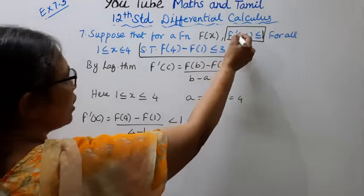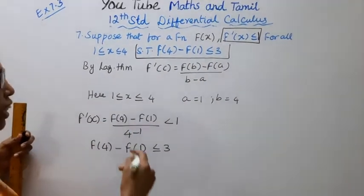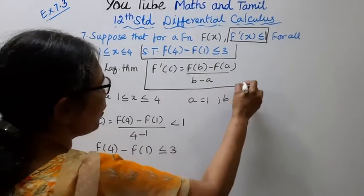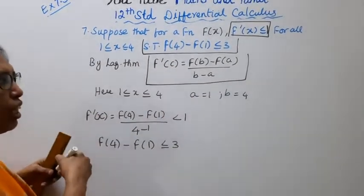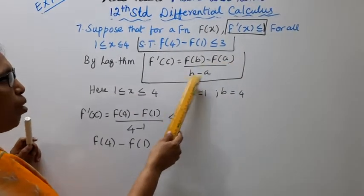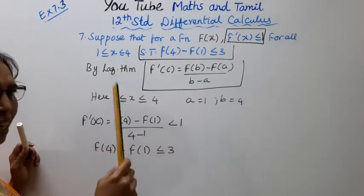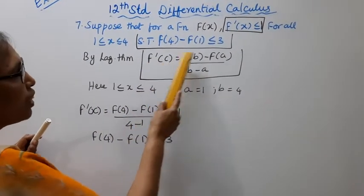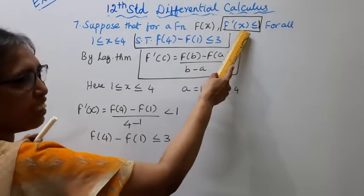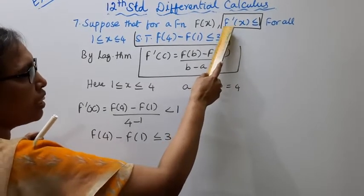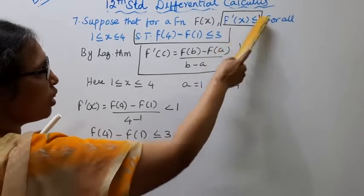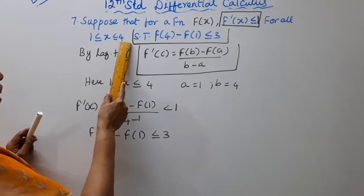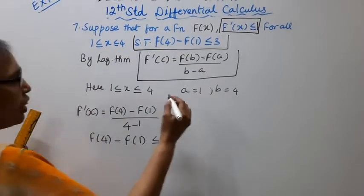Now, to prove that f'(x) is less than or equal to 1, by Lagrange's theorem we are going to use f'(c) equals f(b) minus f(a) by b minus a. We need to identify a and b. We know f'(x) is less than or equal to 1, and 1 less than or equal to x less than or equal to 4. So a equals 1, b equals 4.